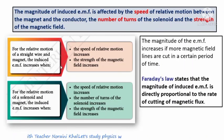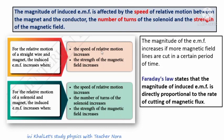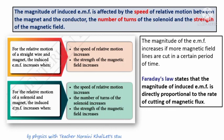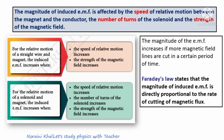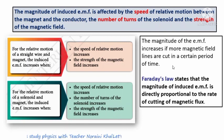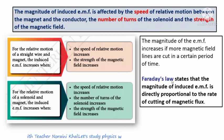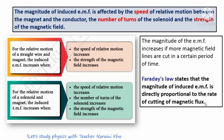For relative motion of a straight wire and magnet, the induced EMF increases when the speed of relative motion increases and when the strength of the magnetic field increases. For relative motion of a solenoid and magnet, the induced EMF also increases when the number of turns increases. Faraday's law states that the magnitude of induced EMF is directly proportional to the rate of cutting of magnetic flux, or the rate of change of magnetic flux.